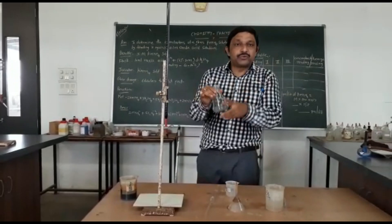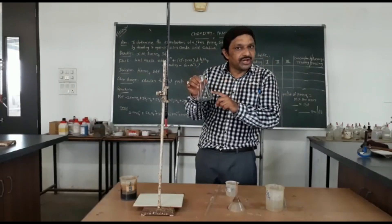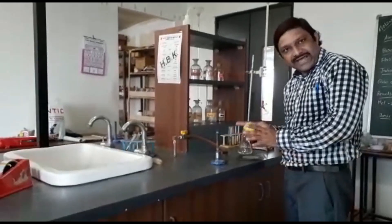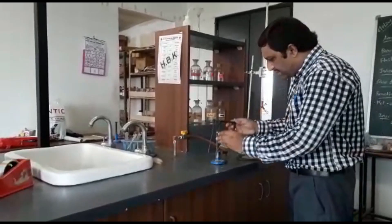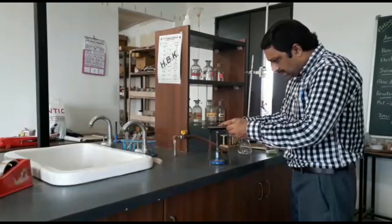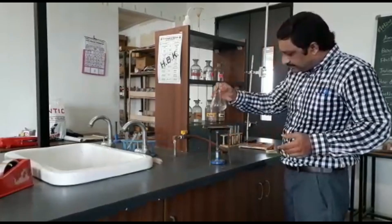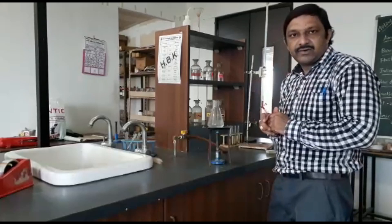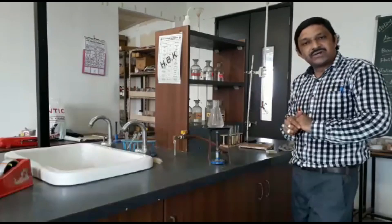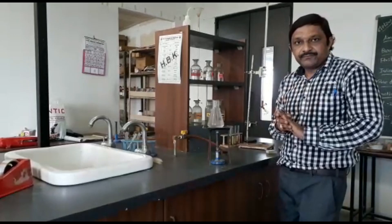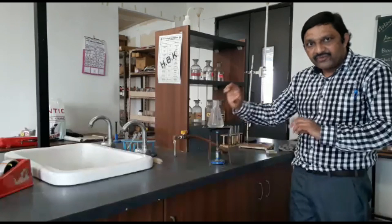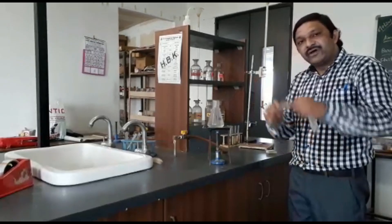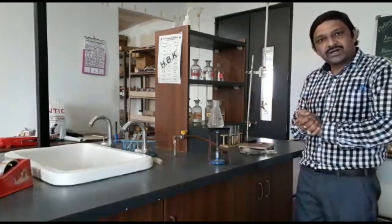Now you have to heat your conical flask solution up to 60 to 70 degrees centigrade. Here is your gas burner, here is your tripod stand — place it like this with the asbestos mat, and place your conical flask with the solution on top. Heat the solution. When vapour comes from the side, remove the conical flask using a handkerchief.